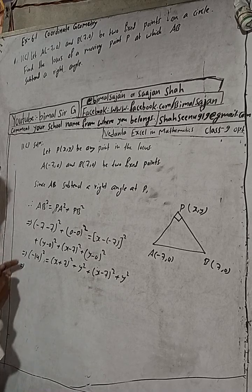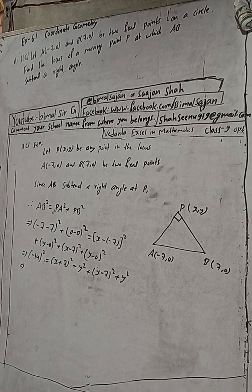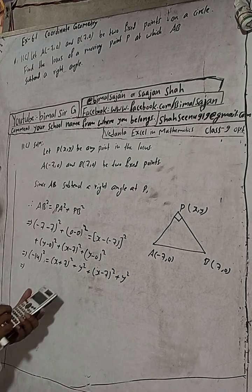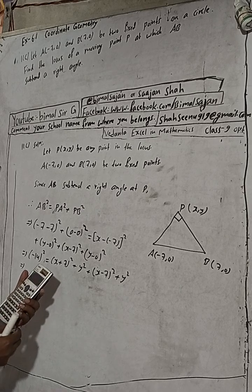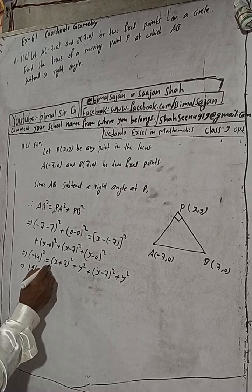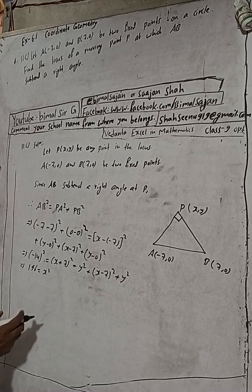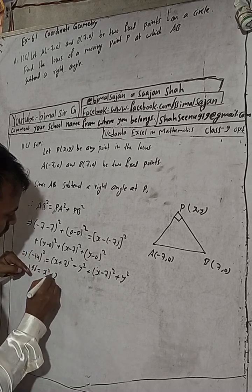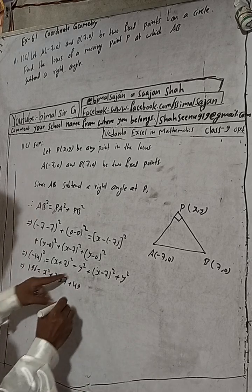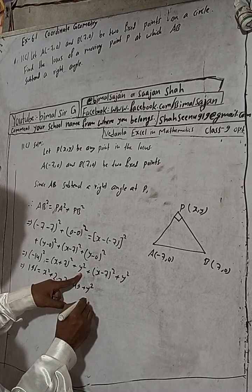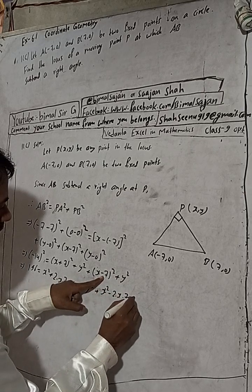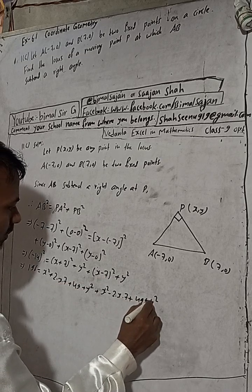Now we apply the formula. (x + 7) whole square equals x square plus 2 into x into 7 plus 49, that is x² + 14x + 49, plus y square. And (x − 7) whole square equals x² minus 2 into x into 7 plus 49, that is x² − 14x + 49, plus y square. So 196 equals x² + 14x + 49 + y² + x² − 14x + 49 + y².